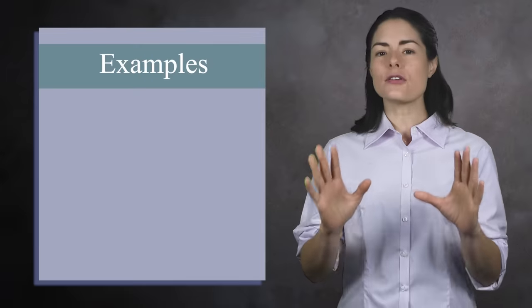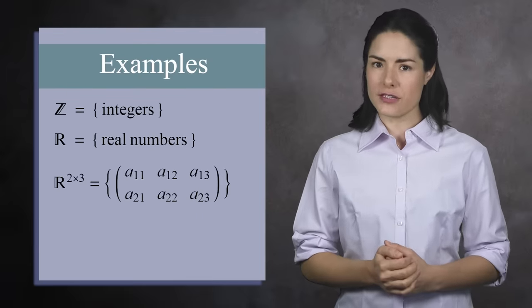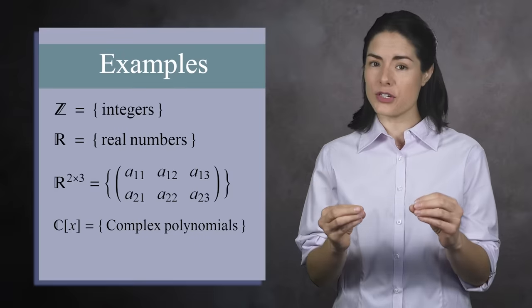Before we give the textbook definition of a ring, let's see some examples which will motivate the idea. Consider these four sets: the integers, the real numbers, 2 by 3 matrices with real entries, and polynomials with complex coefficients.